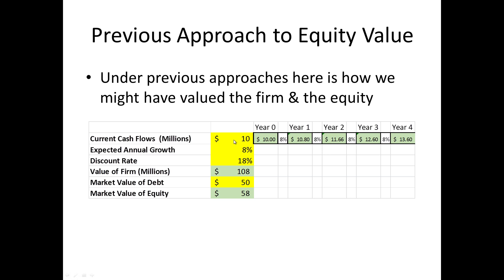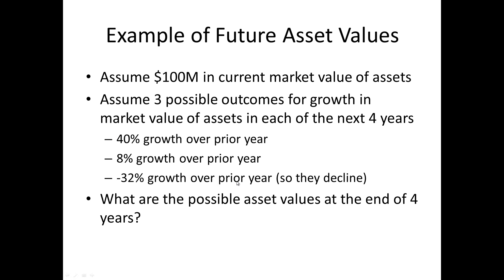For example, you might say you've got ten million dollars in cash flows this year, growing at eight percent a year, with an eighteen percent discount rate from CAPM. Putting that ten million dollar cash flow into the discounted cash flow model using the present value of perpetuity gives a hundred and eight million dollar value for the firm. Subtract out fifty million in debt and you get a market value of equity of fifty-eight million.